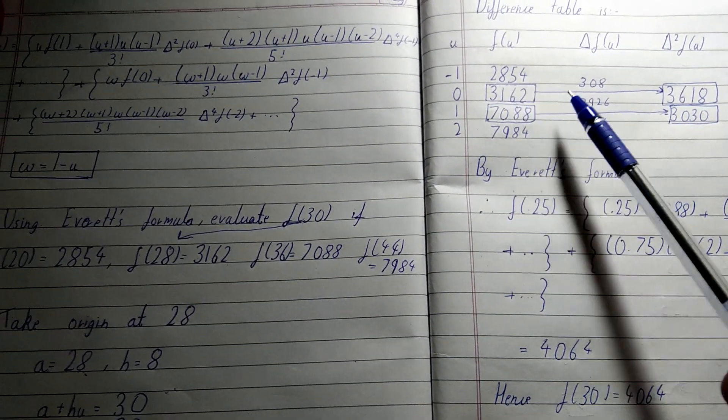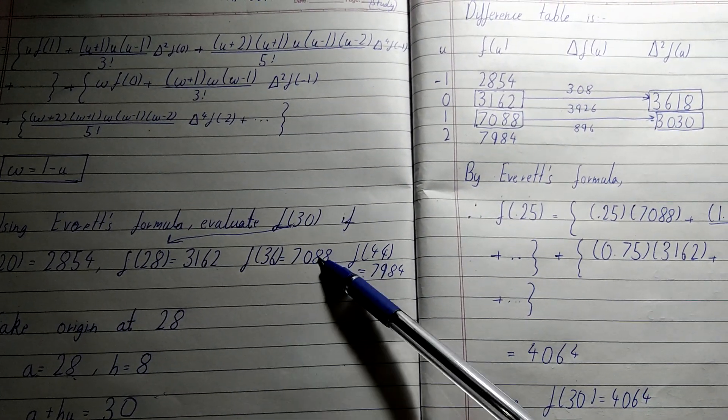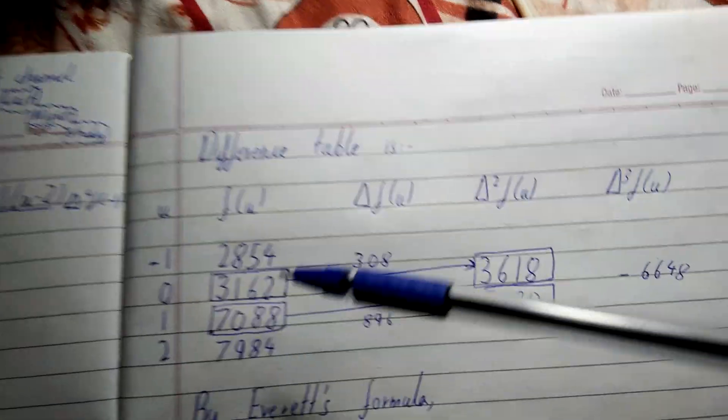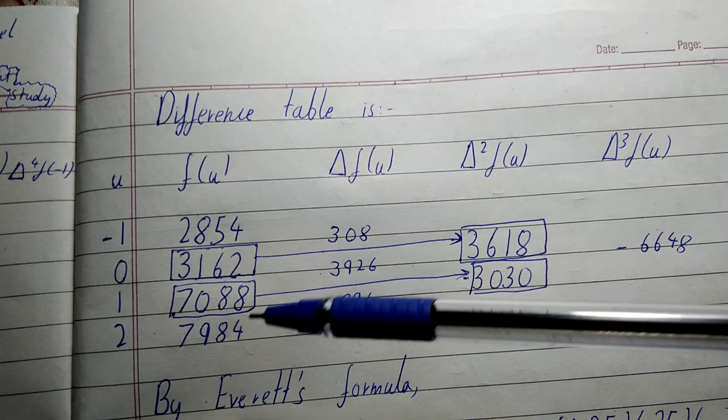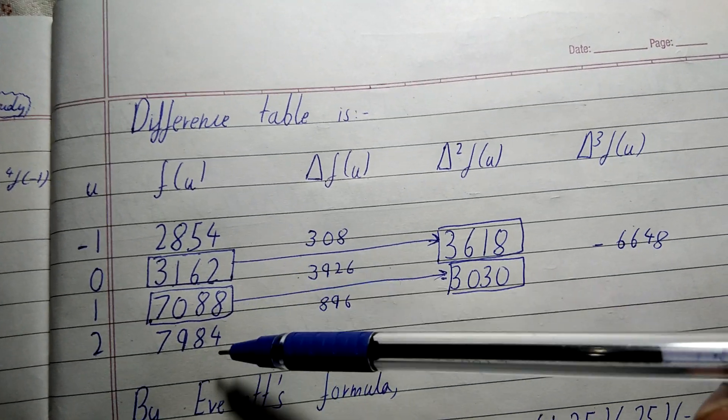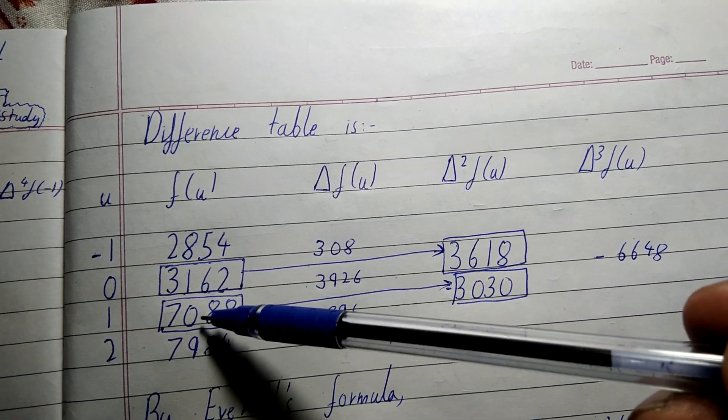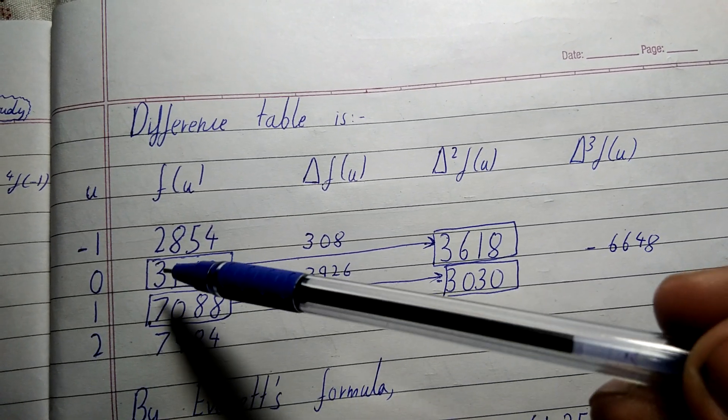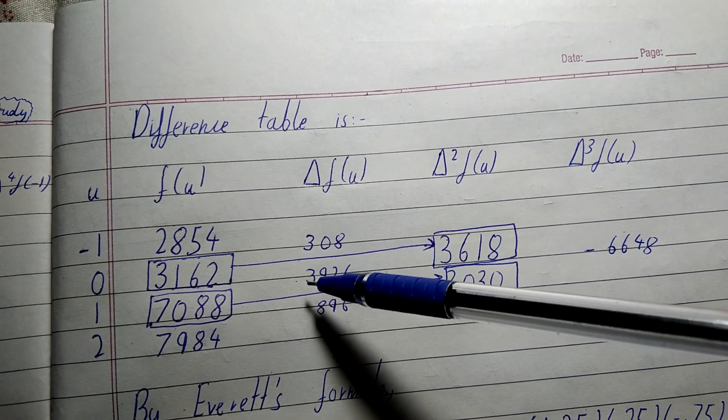Once you have placed the values, you have to just subtract the upper from the lower one. That is 7984 - 7088 = 896. 7088 - 3162 = 3926.